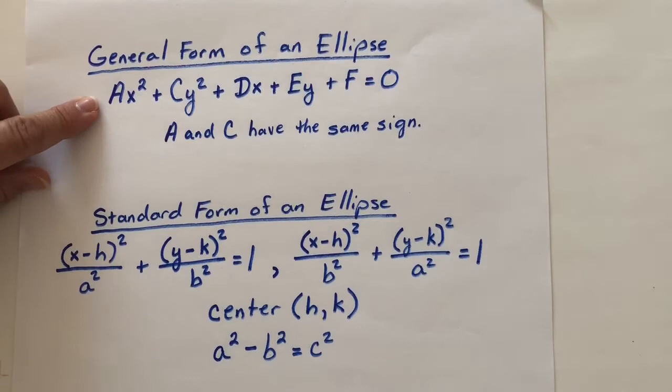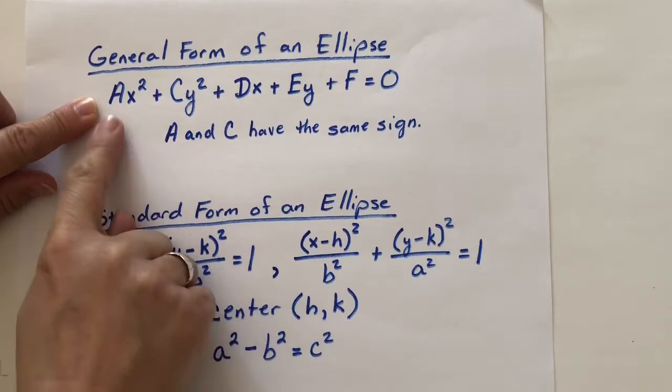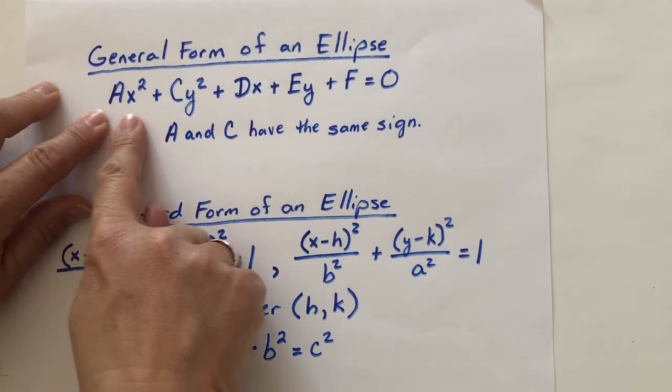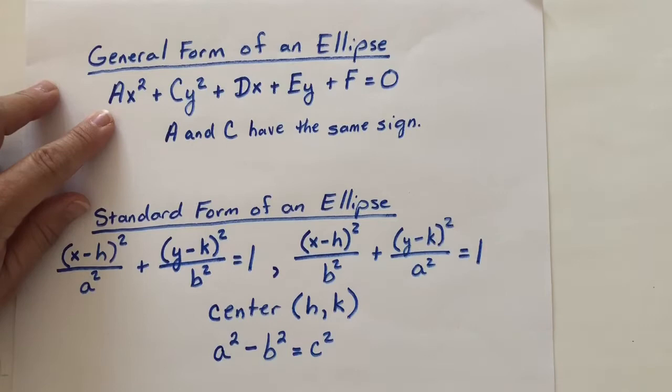So let me remind you that in general form the equation of an ellipse could look like this with A and C having the same sign. If they had different signs we would be talking about a hyperbola, but for it to be an ellipse the equation would look something like this with these two having the same sign.